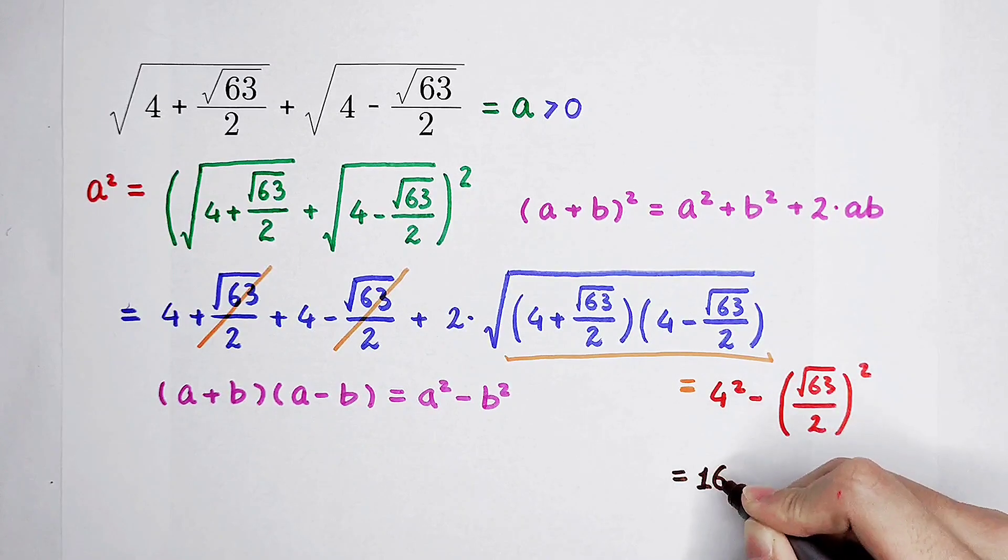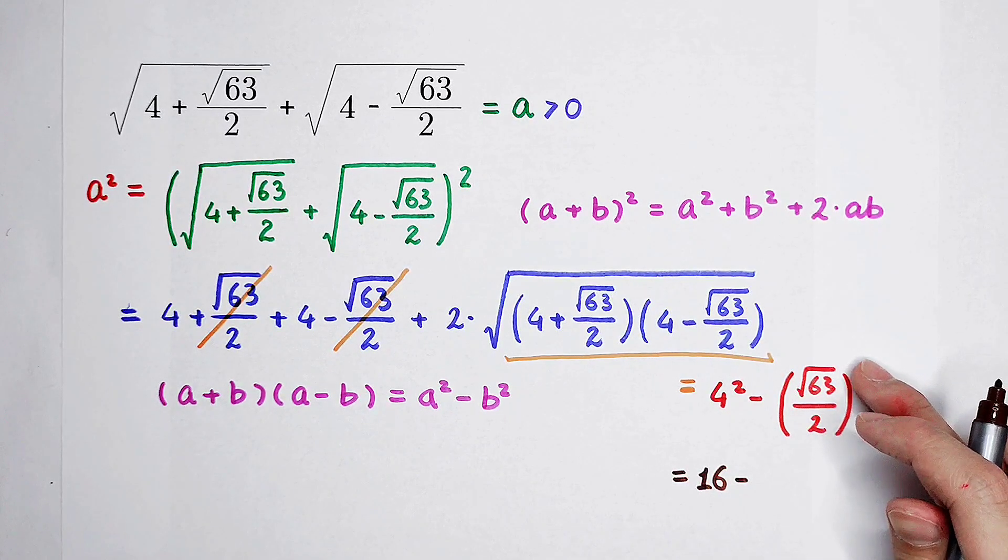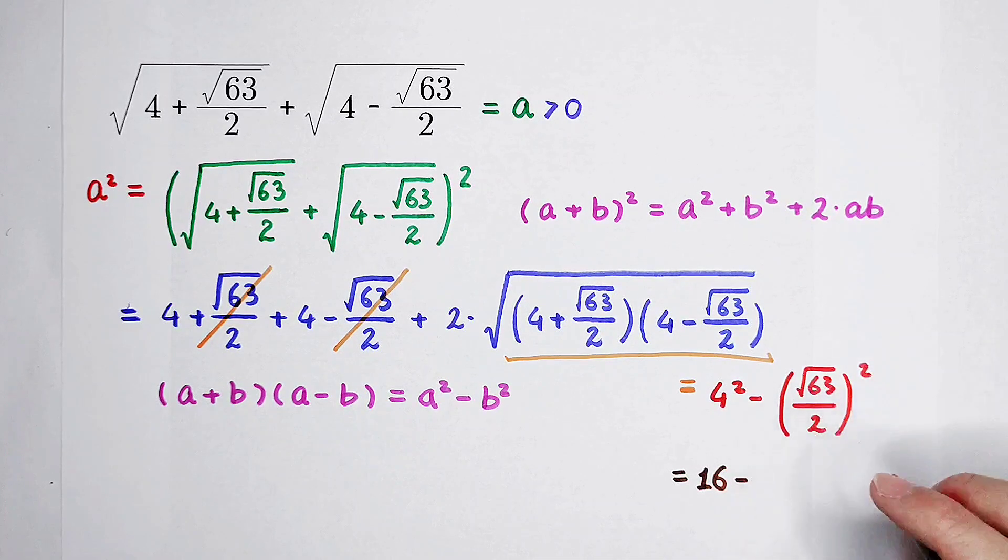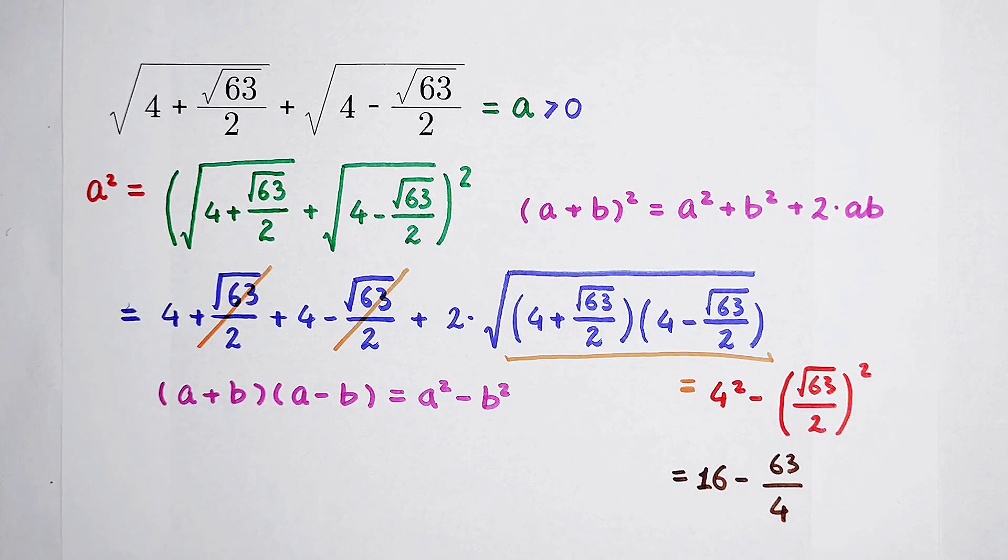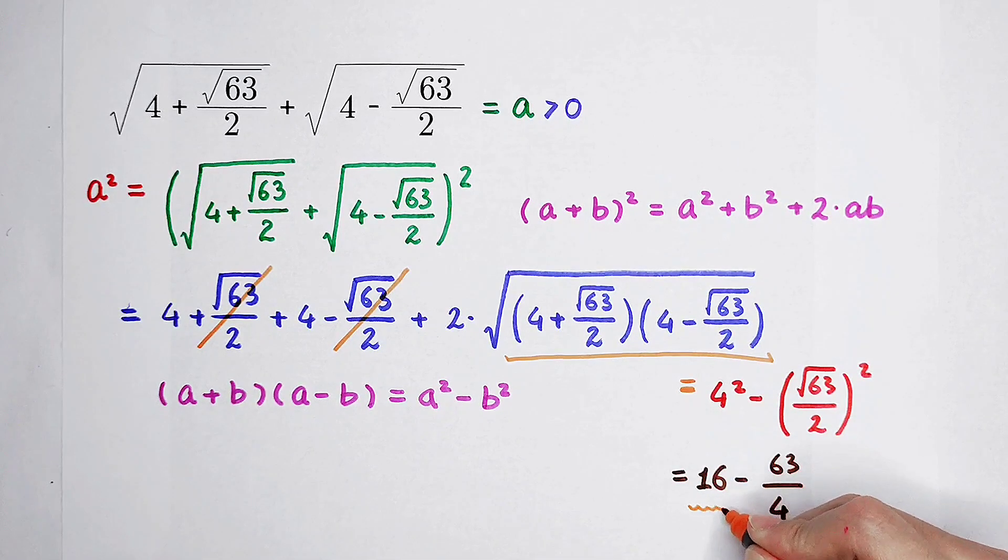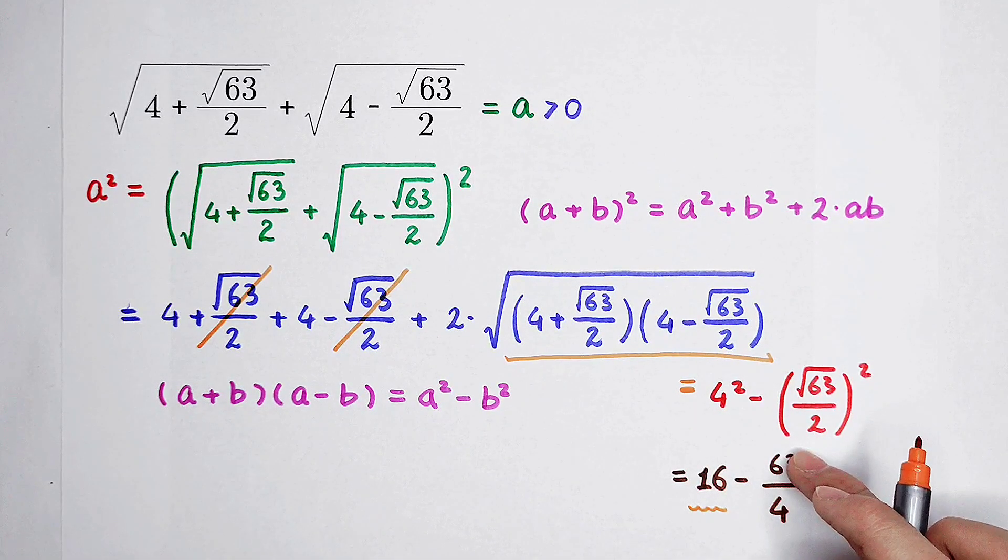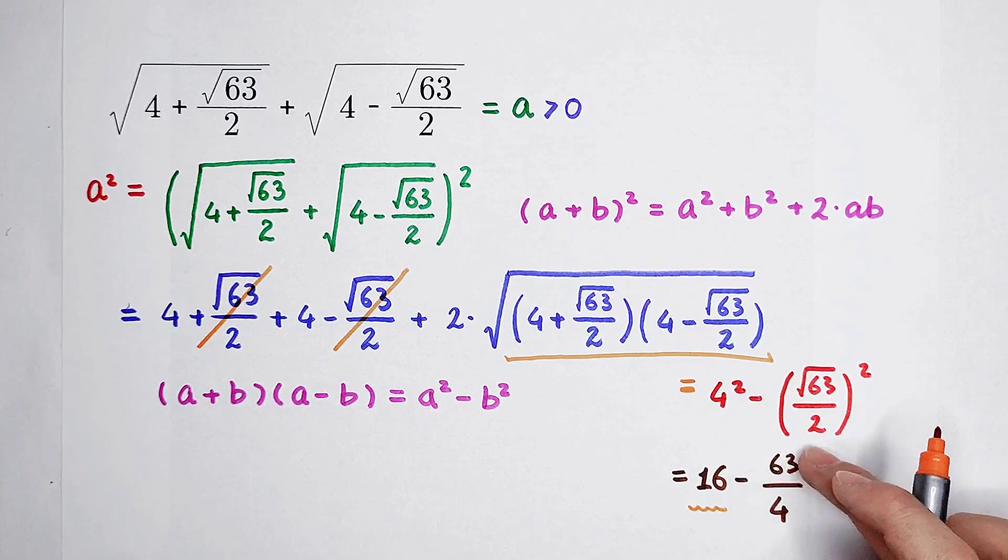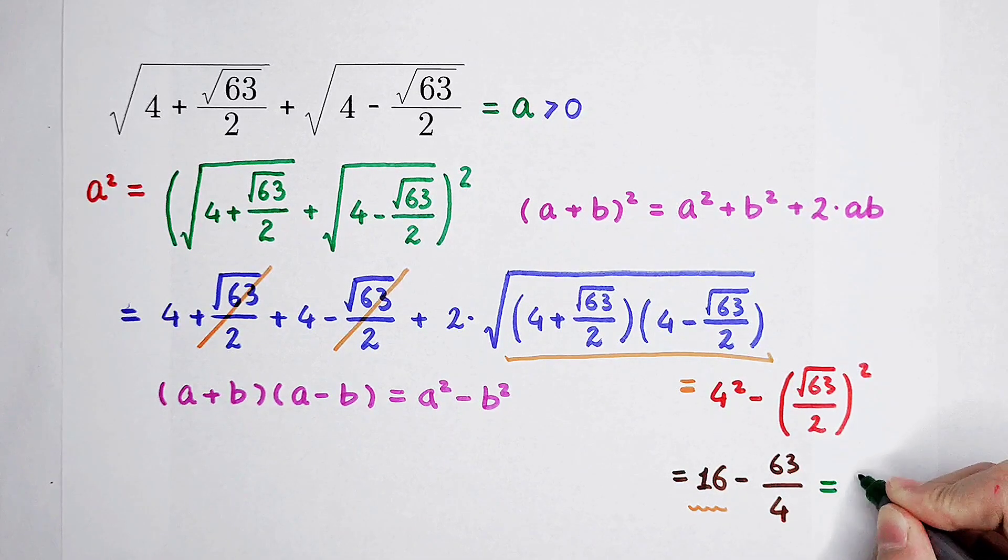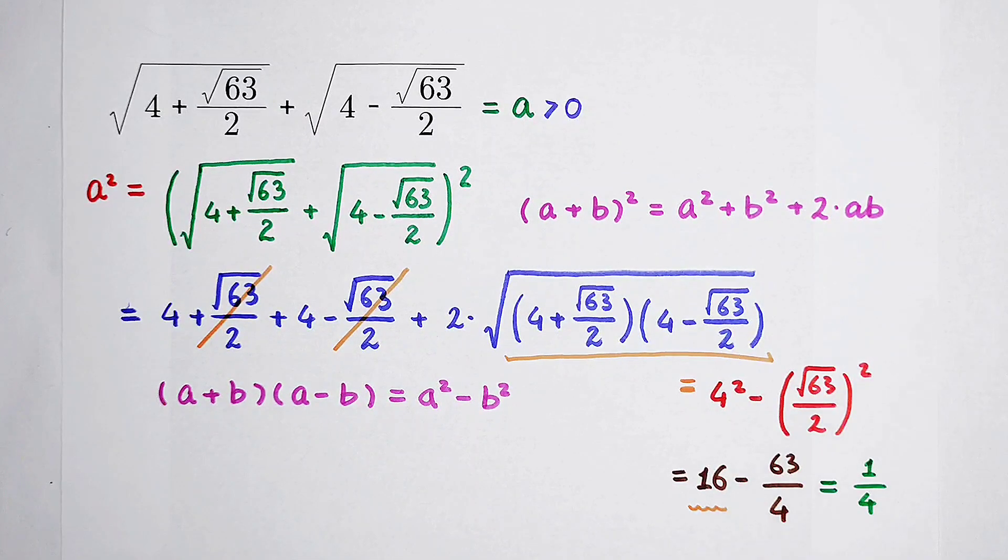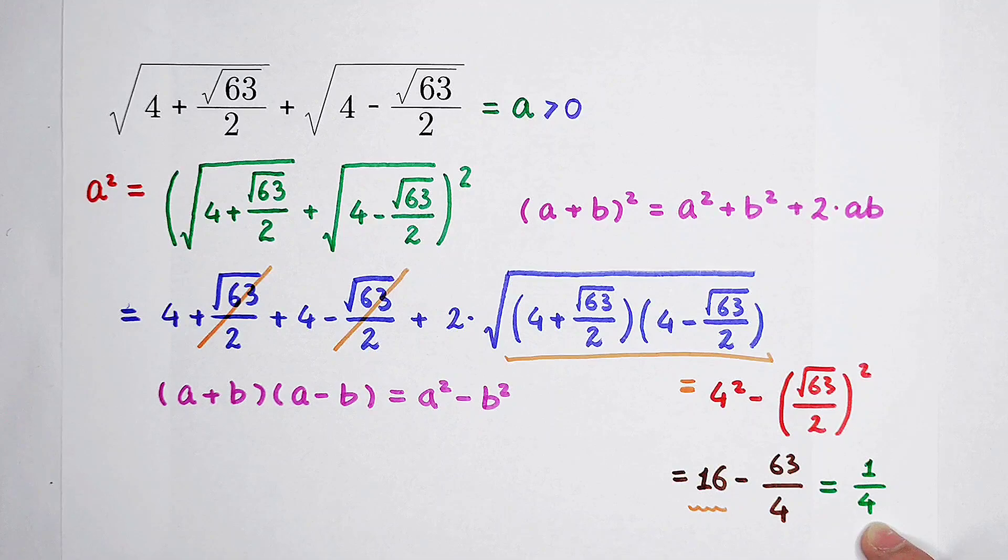Then, 4 squared is 16, minus this squared. A over b squared, it is equal to a squared divided by b squared. Square root of 63 squared is 63 divided by 2 squared, which is 4. So, it is 64 divided by 4, and then minus 63 divided by 4. It is 64 then minus 63, all divided by 4, is 1 fourth. So, the value of this is 1 over 4, and then this is the number which is under the root. It is 1 divided by 4.